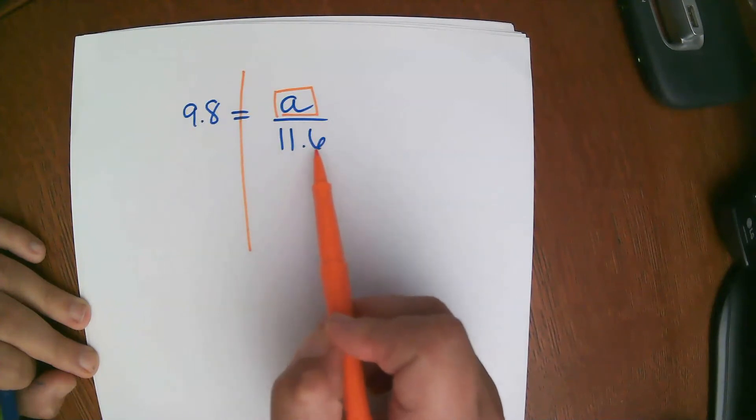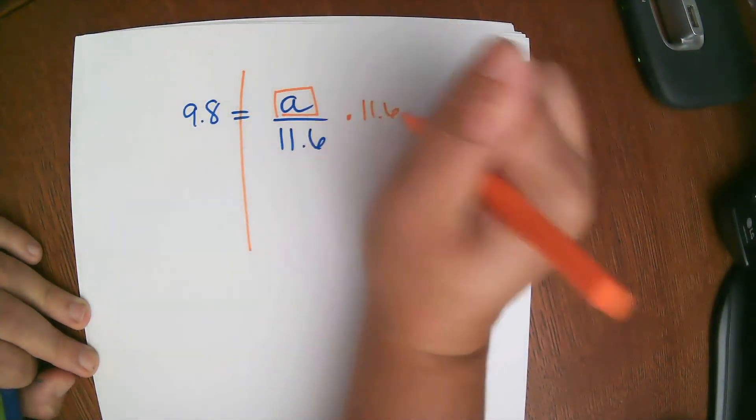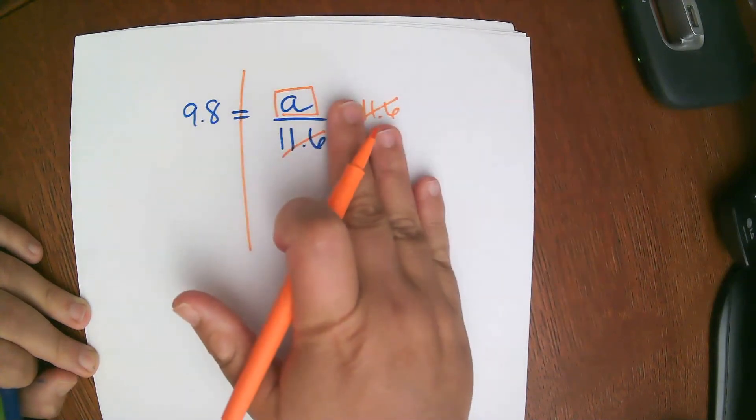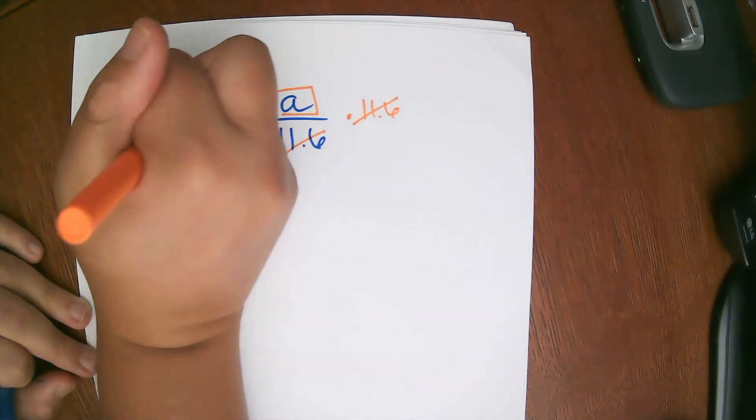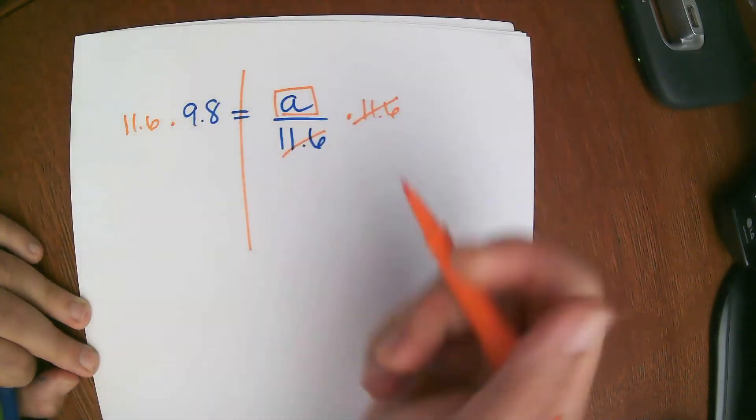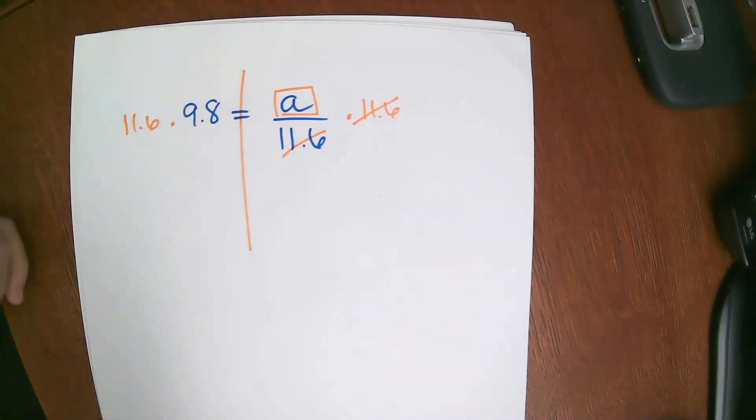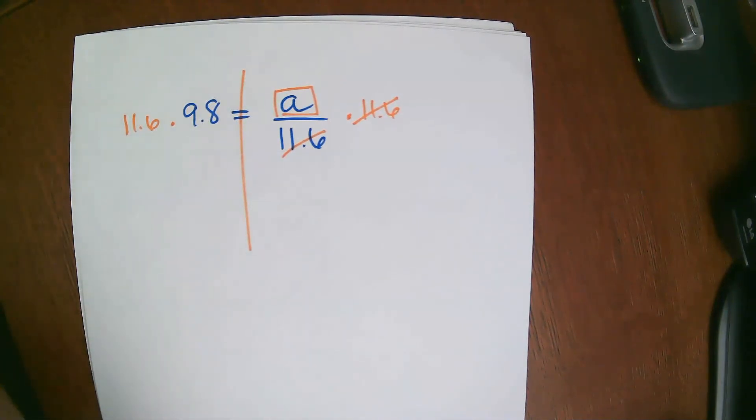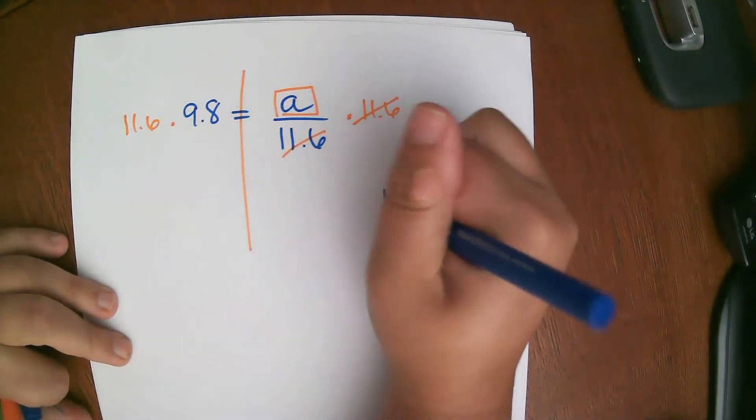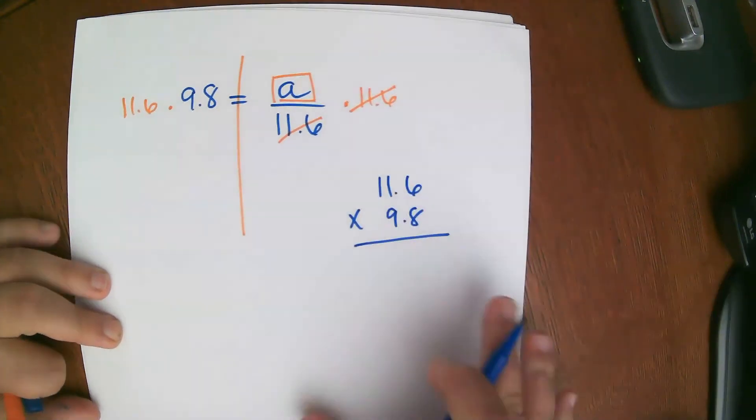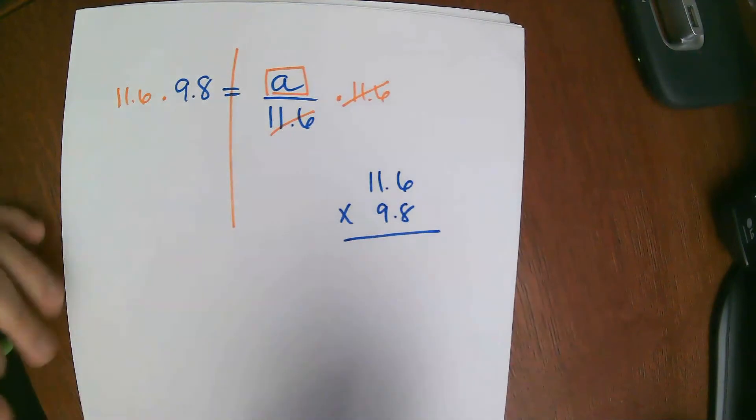So a is kind of in a bad mood. A is in a bad mood because we have 11.6 right below it, right? So this says a divided by 11.6. So what's the inverse operation of a divided by 11.6? Well, it's multiplied by 11.6. These end up cross-cancelling out. And what we do to one side, we're going to do the same to the other. So on this side, we're left with a multiplication problem. We have 9.8 times 11.6. So let's work it out.